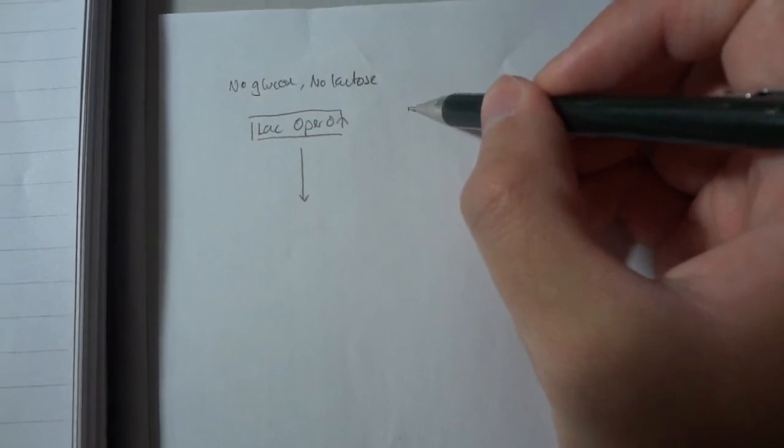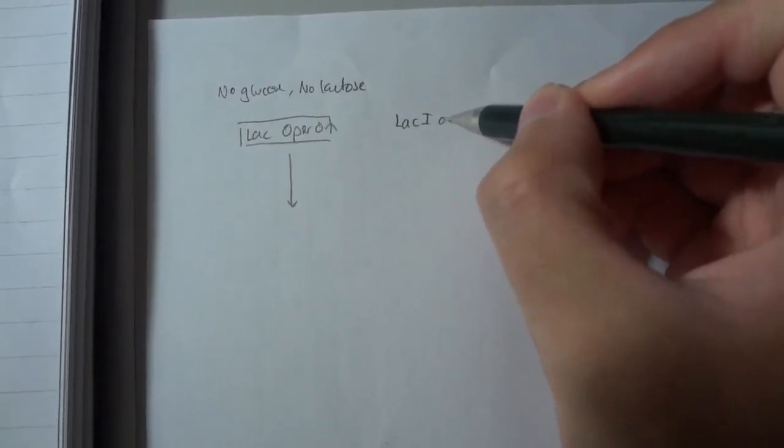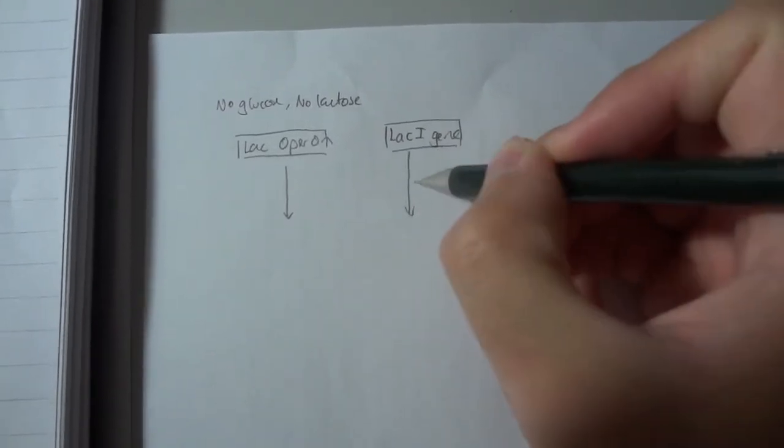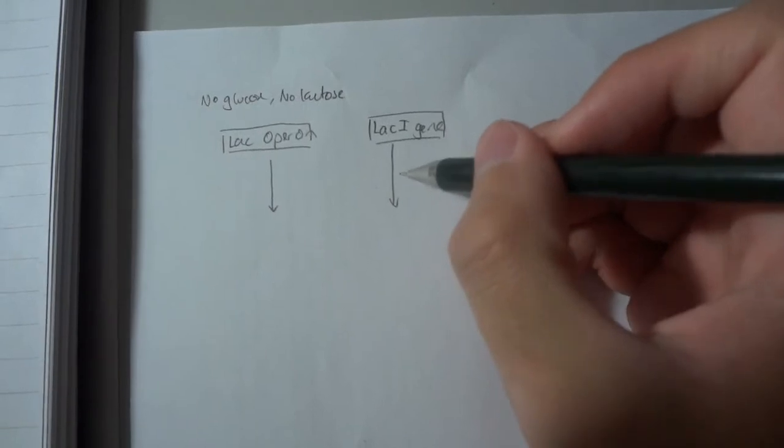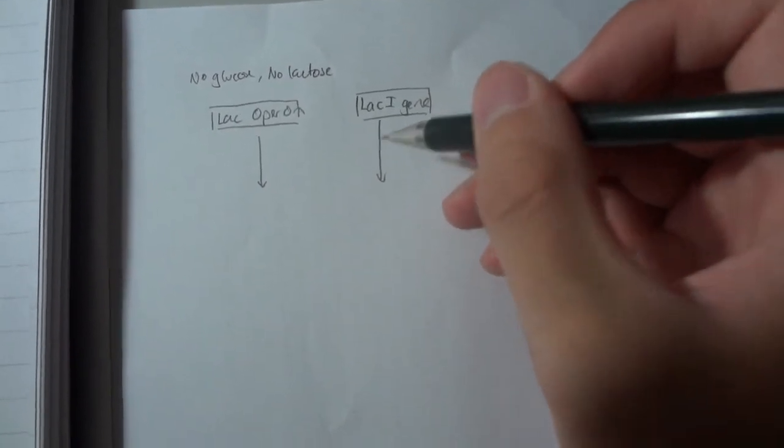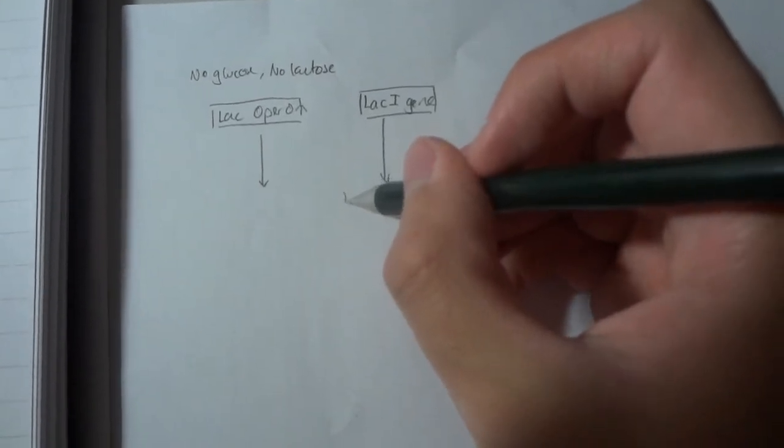And the reason for that is upstream of the lac operon, there's a gene called the lacI gene. And this is constitutively expressed, meaning that it's just always on. But it happens to be on at a low level. And this gene constantly creates a protein called the repressor.